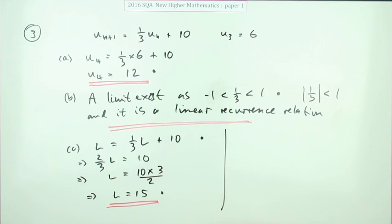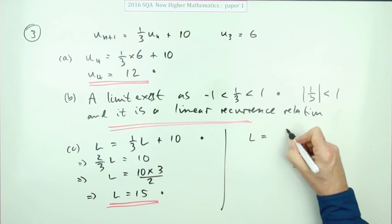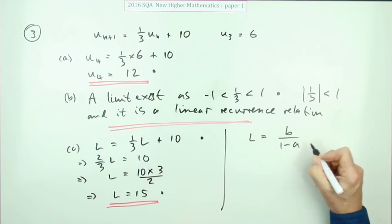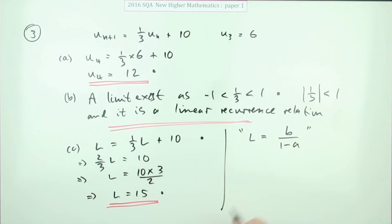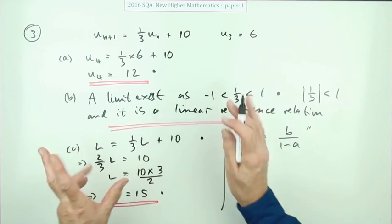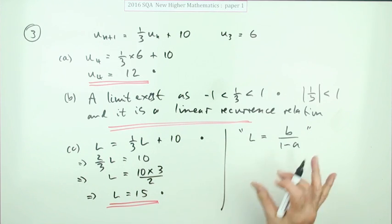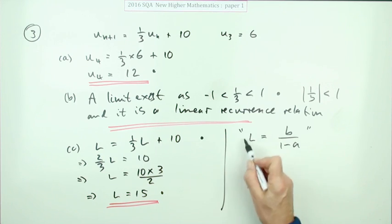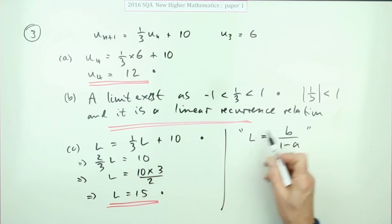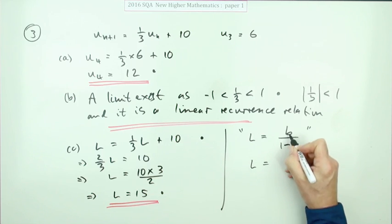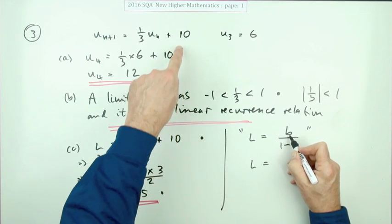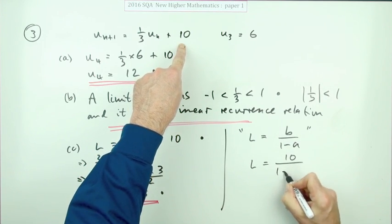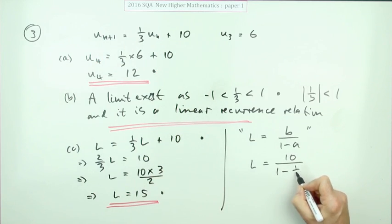Or you could jump in with the formula. That formula L equals B over one minus A. And I'll just put that in inverted commas because there's no mentions of A's or B's anywhere. It's a convention, though. If you were just to state that on its own, you wouldn't get this first mark. You won't get that first mark until you've said what those things stand for: B being the number that's added and A being that coefficient. That would get you the first mark.